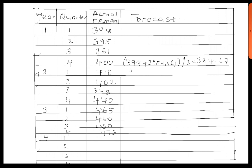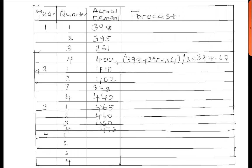For quarter 1 of year 2, we get the average for the last three actual data values. That will be 400, 361, and 395 — the last 3. Remember our N value is 3, three-period moving average. So we say 400 plus 361 plus 395, all divided by 3, which gives 385.33.